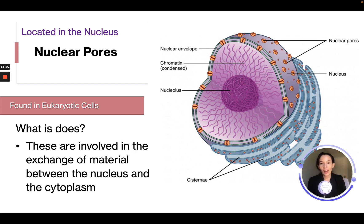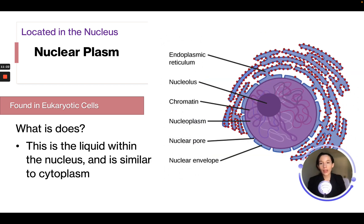Nuclear pores are located around the nucleus and are involved in the exchange of materials between the nucleus and the cytoplasm — very similar to the outer membrane of the cell. The nucleoplasm is the liquid within the nucleus, similar to the cytoplasm, and is found only in eukaryote cells since they are the only ones with a nucleus.